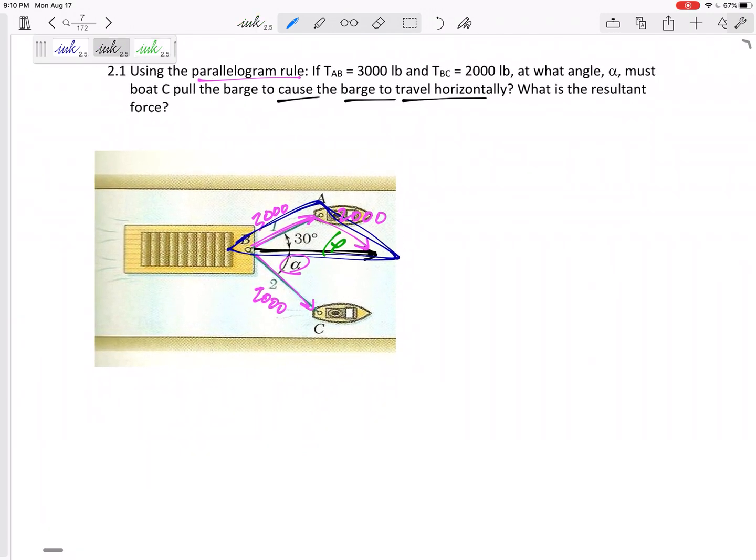How about sine of alpha? What is opposite? 3,000. And then sine of 30. What is opposite? 2,000. Yeah, there we go. There we go.